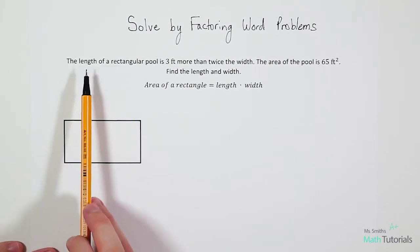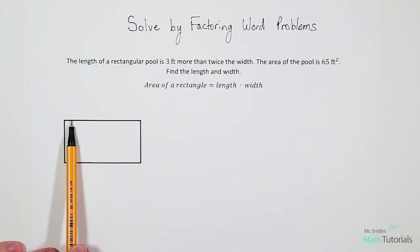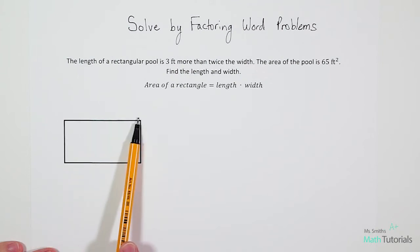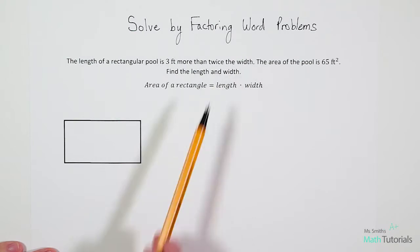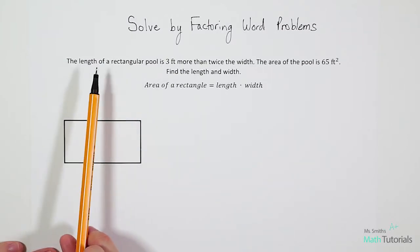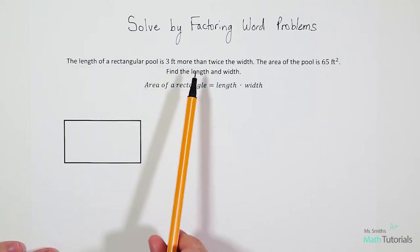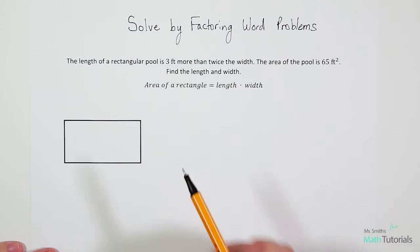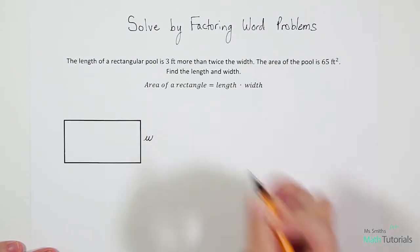Let's break down this first sentence, the length of a rectangular pool. So length would be this distance right here. So our length is three feet more than twice the width. Anytime we deal with problems like this, I always try to think, which side do we know nothing about? And if we read this sentence, we know a lot about the length. It says the length is three feet more than twice the width, but we don't know anything about the actual width. We're just going to call it W for width.